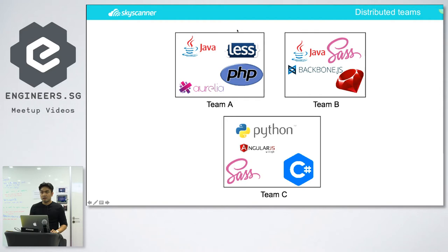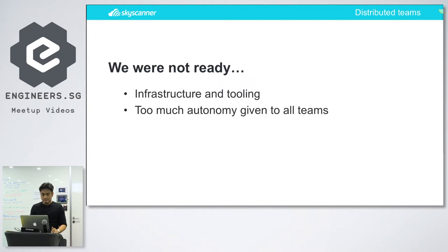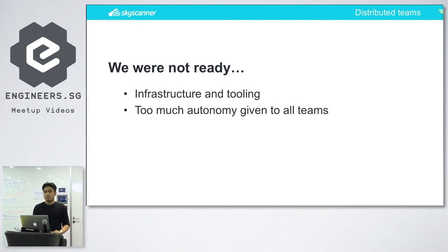For example, there was Aurelia — a JS framework that one of our engineers in Singapore proposed — and right now I don't know what happened to that framework. The story here is that we were not ready because we didn't have the proper infrastructure and tooling, and we also gave all the teams too much autonomy in what they were doing, so we ended up with this diverse set of languages and frameworks. At the time we were also experimenting with AWS — we gave everyone a $500 budget per month on AWS and the license to deploy and use AWS for every team, and that's one of the consequences we needed to face.